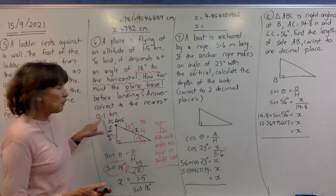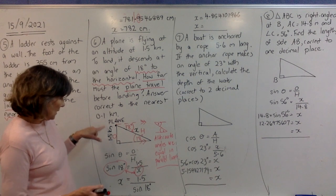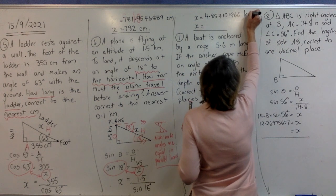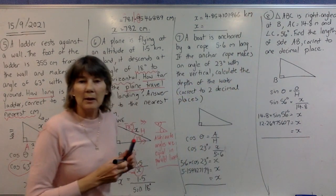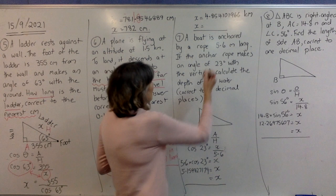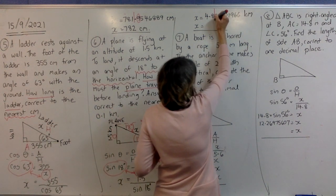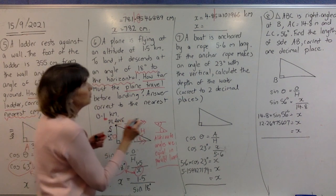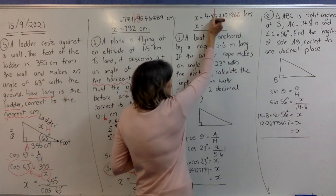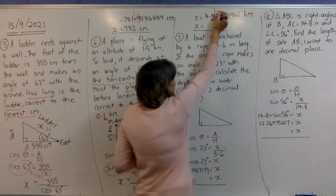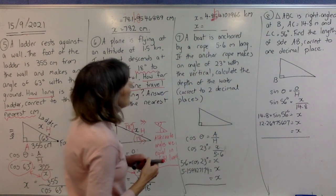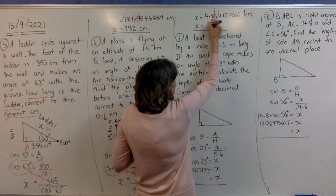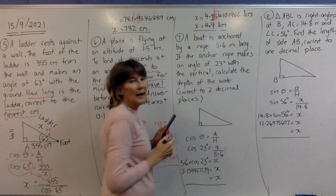The answer is in kilometers, and they want it correct to the nearest 0.1 of a kilometer — that's one decimal place. Draw a line after one decimal place, look at the next digit: it's five or more, so round up by one. The answer becomes 4.9 kilometers — keep everything else and that's your answer.